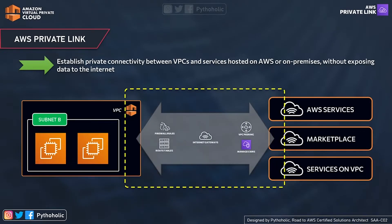Before moving forward with what Private Link is and how it works, forget everything about AWS. In common English vocabulary, a private link is a link connecting two points, creating a connection between them. If it's a private link, then the parties involved in the communication link are the only ones who can interact with each other at a given point of time — that's how a private link is formed.